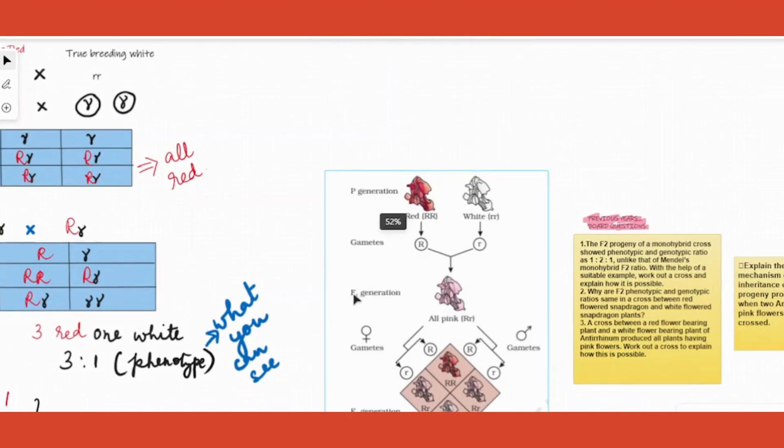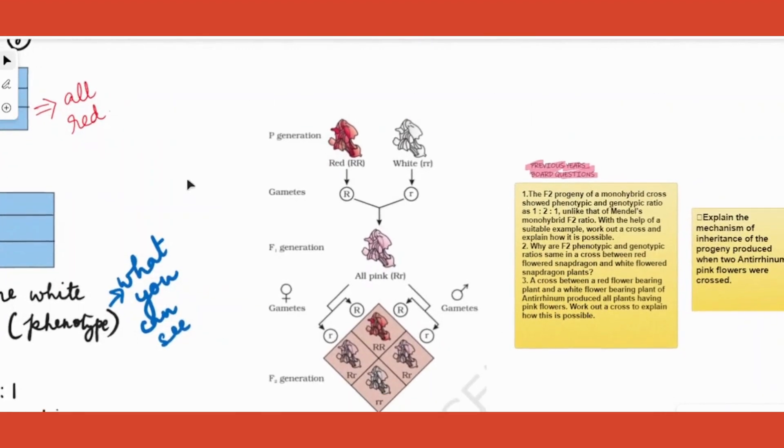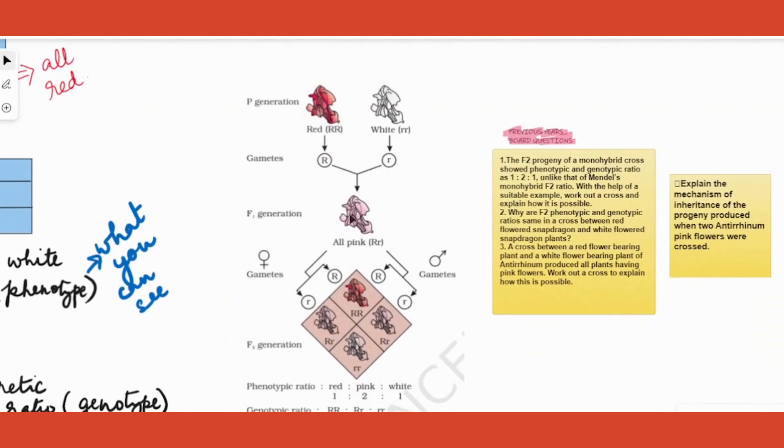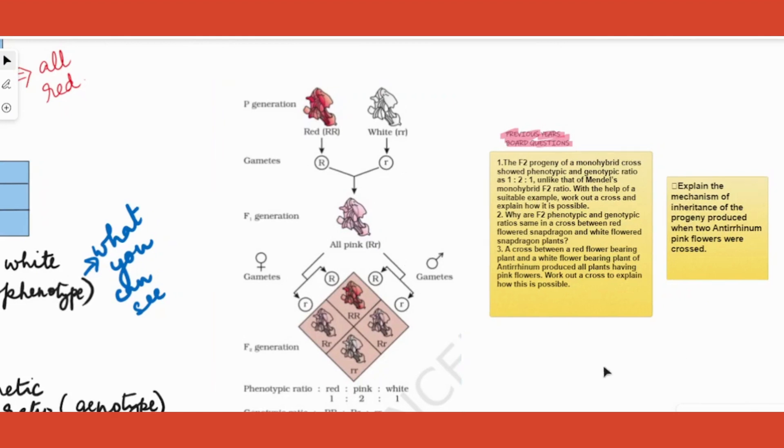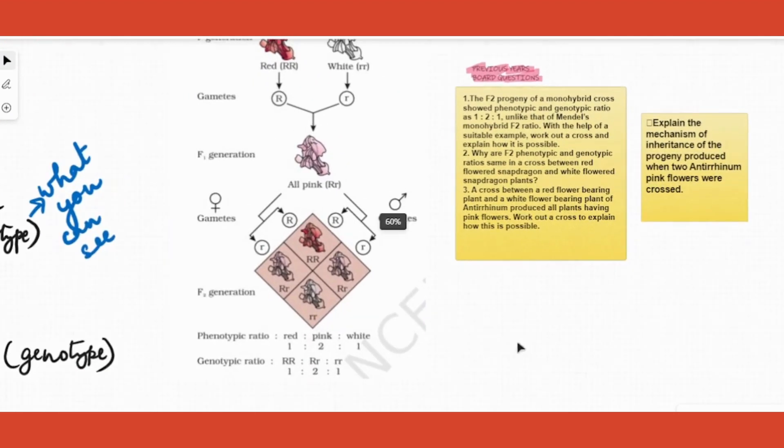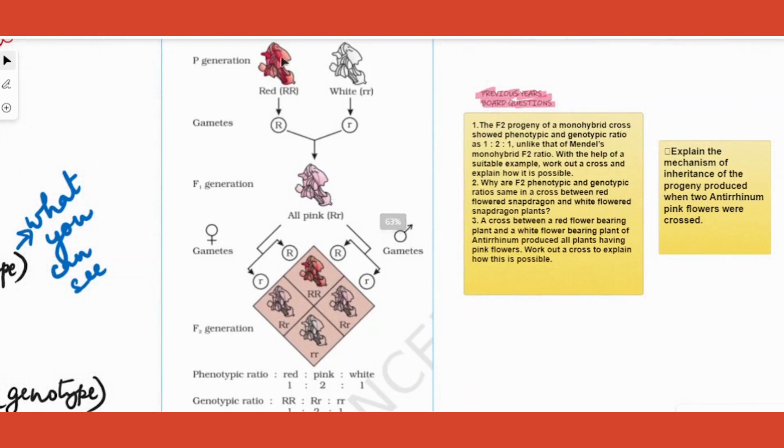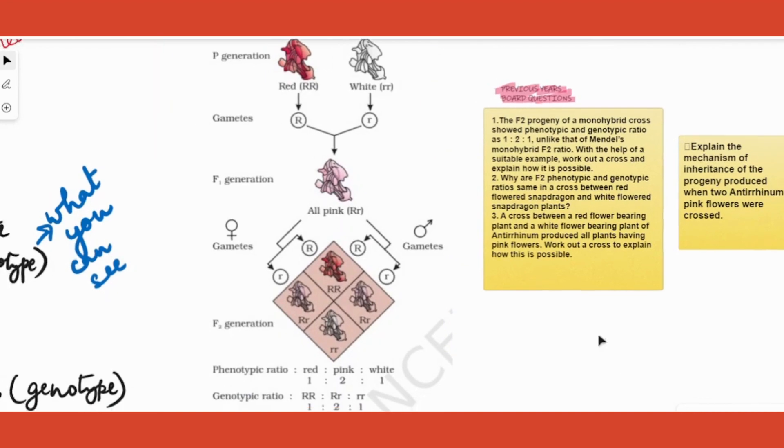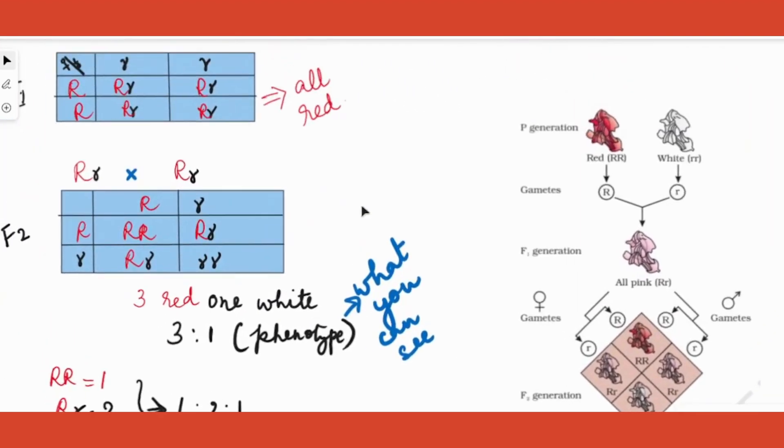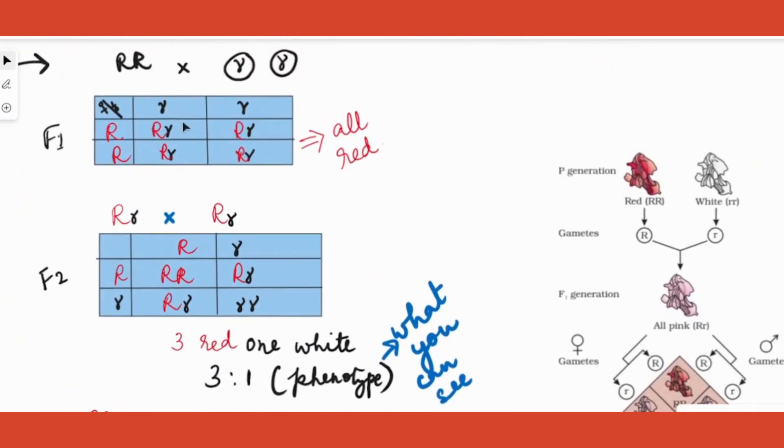However, in case of certain plants like the snapdragon, both traits are - not one of them is dominant over the other. That means both of them are partially dominant, resulting in a mixture of traits. In our case, red and white both are expressed together resulting in the pink coloration. All right, now that was for the F1. F1 here, instead of all this red, we got pink color.